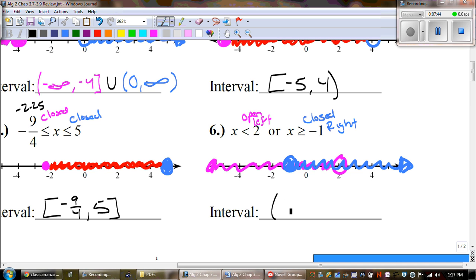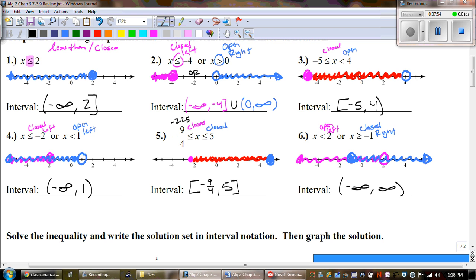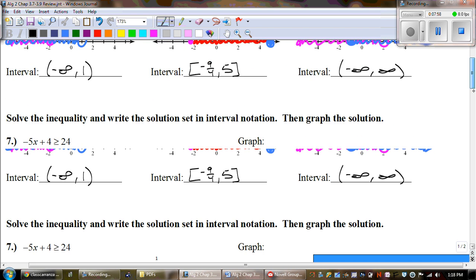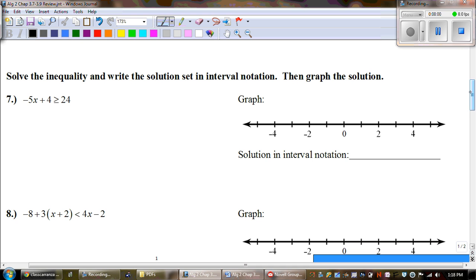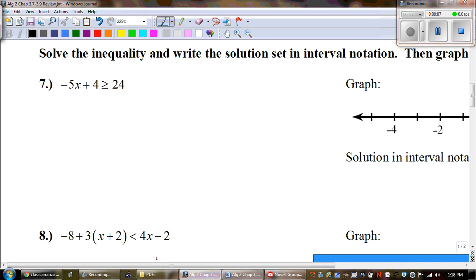The whole graph shaded. So that means my interval notation, it starts at negative infinity and then it goes to positive infinity. And there's one through six. Now for the next one, we're going to have to solve and then graph. So we're going to have a little bit of work to do here. Now, when we're solving, we need to follow.